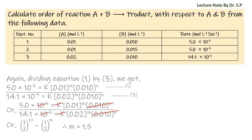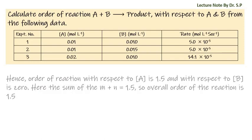By using the law of indices, we get the value of m = 1.5. Since m is the order of reaction with respect to A, the order of reaction with respect to A is 1.5 and with respect to B is 0. The sum m + n = 1.5 + 0 = 1.5, so the overall order of the reaction is 1.5.